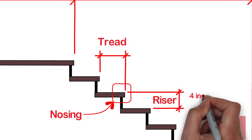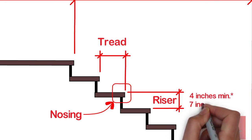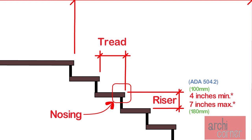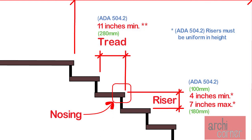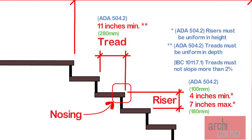The risers are required to be 4 inches minimum and 7 inches maximum in height. The risers must be uniform in height. And the treads are required to be 11 inches minimum. The treads must also be uniform in depth. And lastly, the treads cannot slope more than 2%.